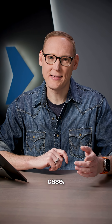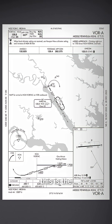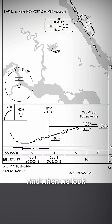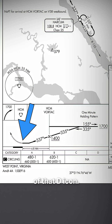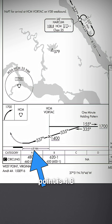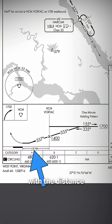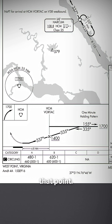For the opposite case, let's take a look at a VOR approach. This is the VOR Alpha at Middle Peninsula Regional in West Point, Virginia. When we look at the profile, you can see that our missed approach point does not have a fix associated with it, nor do we have a distance inside of that D icon. Now that missed approach point is 4.8 nautical miles away from the Harcum Vortac, but since there's no D icon with the distance in there, we can't actually use real DME to identify that point.